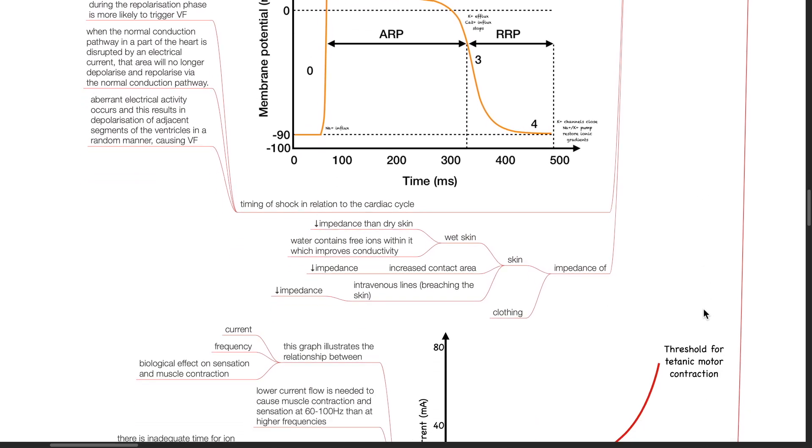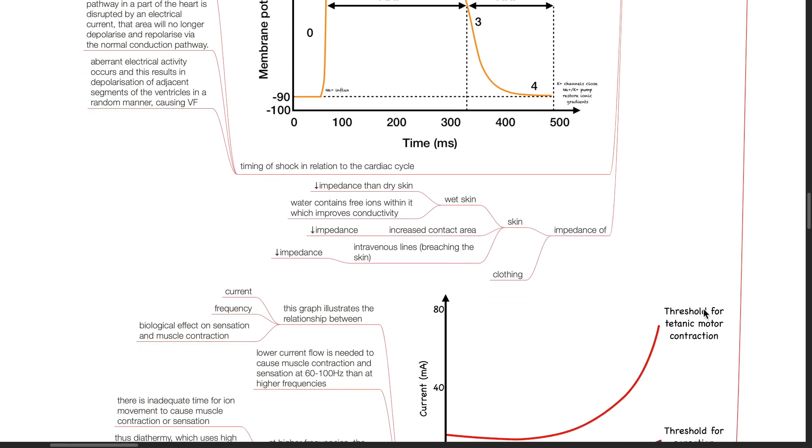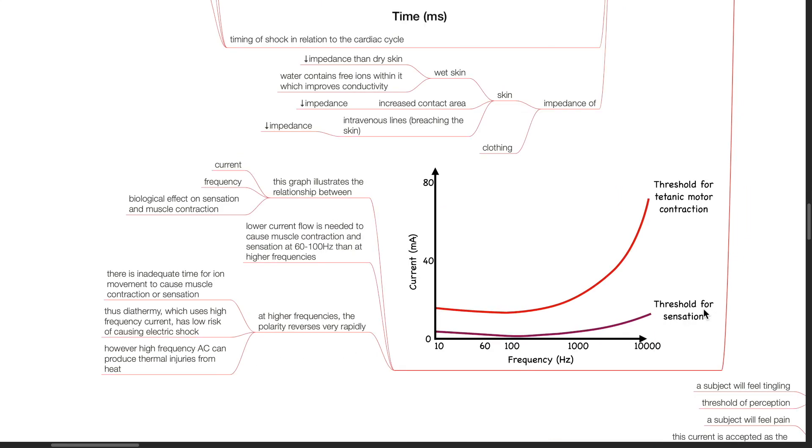Impedance of the skin and clothing. Wet skin reduces impedance compared to dry skin. Water contains free ions which improve conductivity. Increased contact area and intravenous lines which breach the skin reduce impedance to current flow. The presence of clothing increases impedance to current flow.